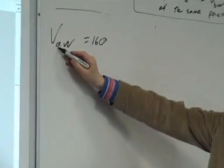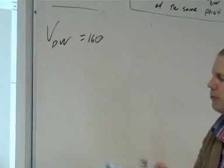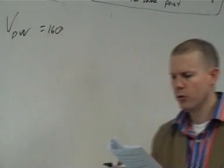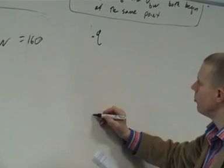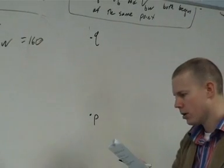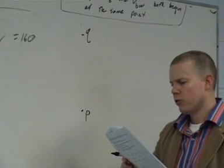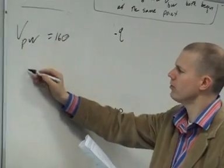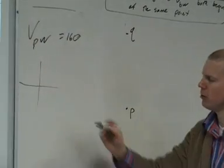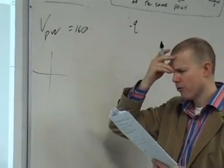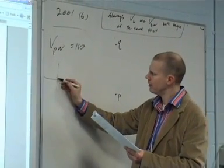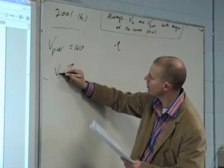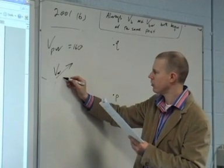V_A, velocity of the airplane relative to the wind. Can I make that plane? Yeah, velocity of the plane relative to the wind. It flies in a straight line from P to Q and back again. Point Q is due north of point P. I get rid of my axes.